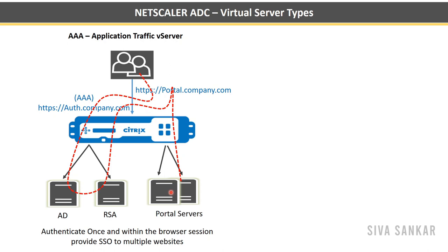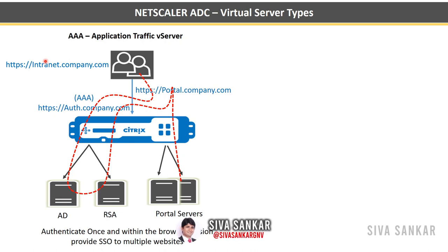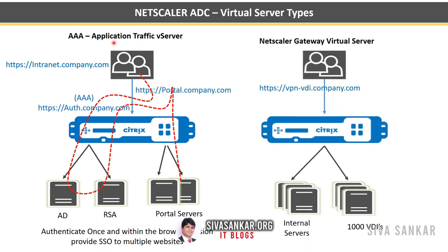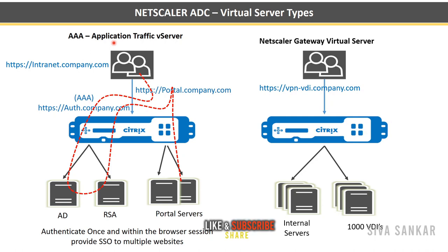For this to work, back-end servers also need to accept the authentication token. If you then have another website, intranet.company.com, requiring similar authentication, the user no longer needs to log in again because they are already authenticated in the same browser. Authenticate once and within the same browser session it provides SSO to multiple websites — this is the use case of the AAA authentication virtual server. The last type is the NetScaler Gateway virtual server, used for VPNs, intranet portals, and VDI mobility.